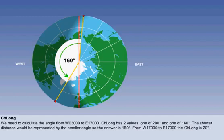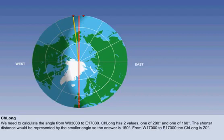Likewise, determining the Chellong from west 1700 to east 1700, the smaller angle in this case would be 20 degrees.